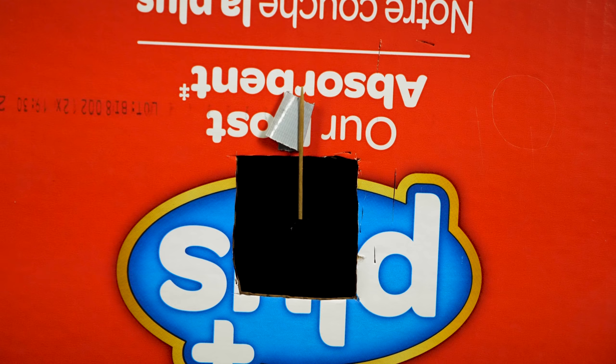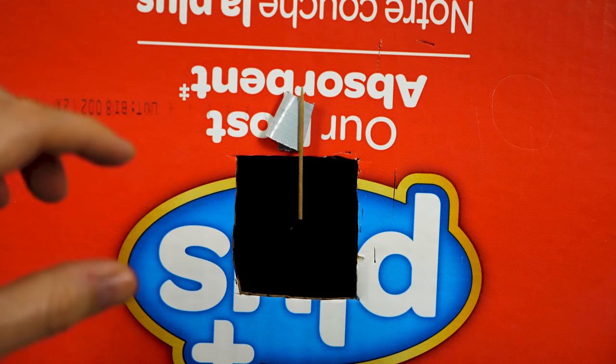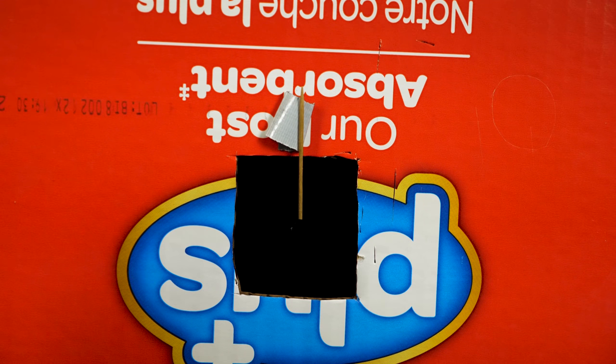Now watch what happens when I shine my 32,000 lumen flashlight on it. Suddenly the Black 3.0 is going to become visible and it's going to suddenly appear almost white. Three, two, one. Look at that. I made the Black 3.0 white.